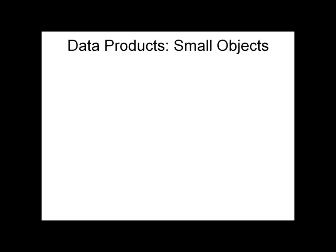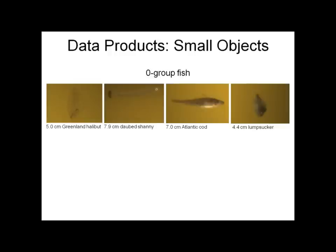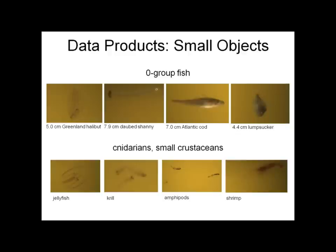We can also look at small objects — here we're looking at zero-group, young-of-the-year fish. So going from tens-of-centimeter and meter scale, we can look at single-centimeter scale as well. In the upper left-hand corner is in fact a Greenland halibut, which is nearly translucent, but we're still able to get good enough images to identify it and do length measurements. And we're not limited to fish — we can also look at things like jellyfish, small crustaceans, krill, amphipods, and shrimp.